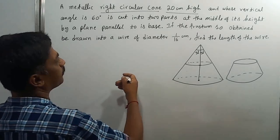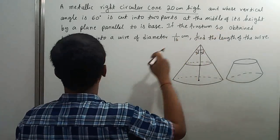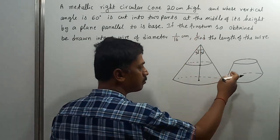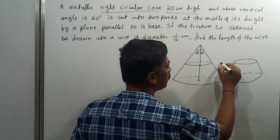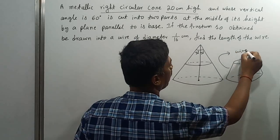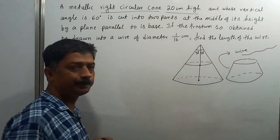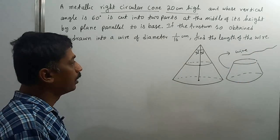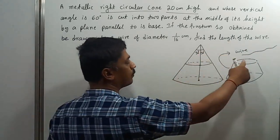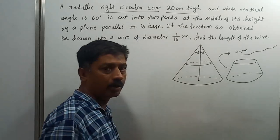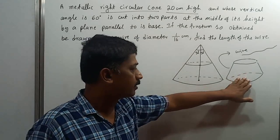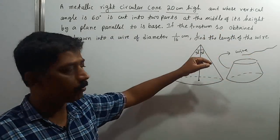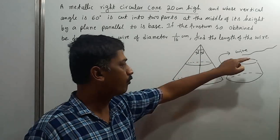The frustum so obtained be drawn into a wire of diameter 1/16th part of a centimeter. This is melted and converted into a wire. A frustum is melted and converted into a wire, and they are asking us to find the length of the wire. Whenever you melt a solid substance and form another solid substance, both volumes are equal. By using this criteria, you can find the length of the wire.